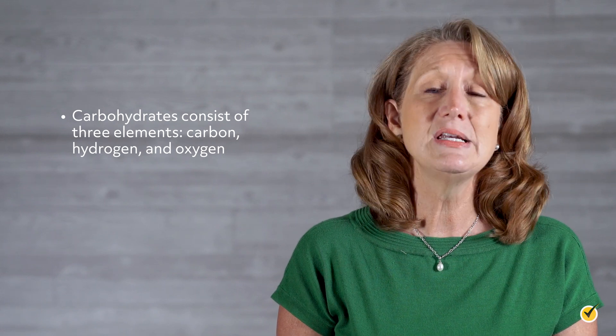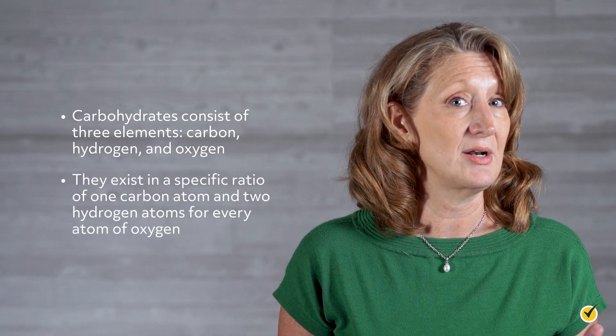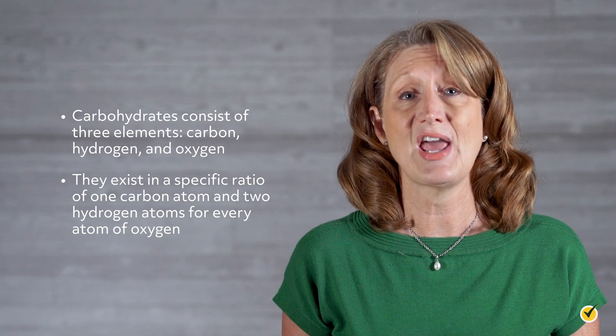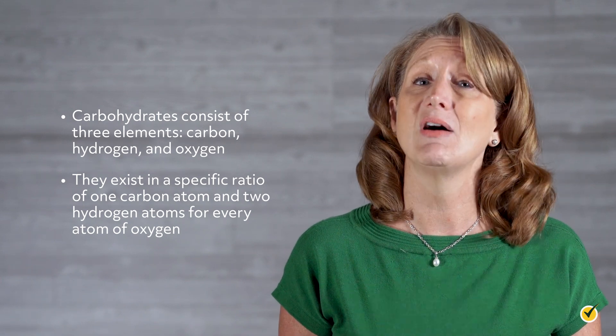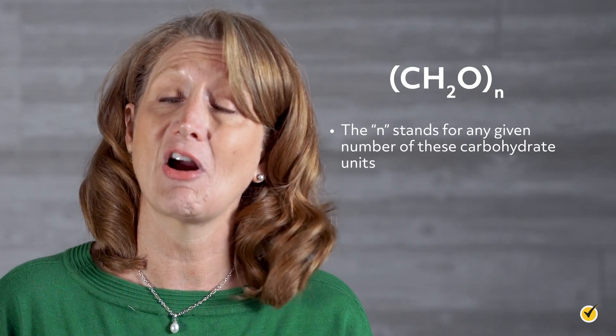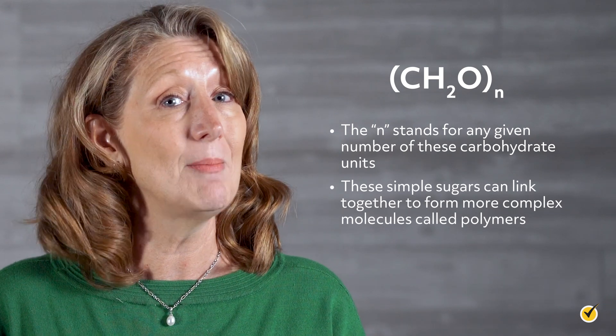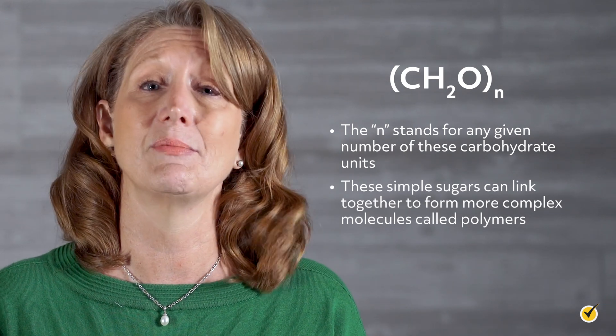Carbohydrates consist of three elements: carbon, hydrogen, and oxygen. They exist in a specific ratio of one carbon atom and two hydrogen atoms for every atom of oxygen. A simpler way to represent this is with the formula CH2O, where N stands for any given number of these carbohydrate units.